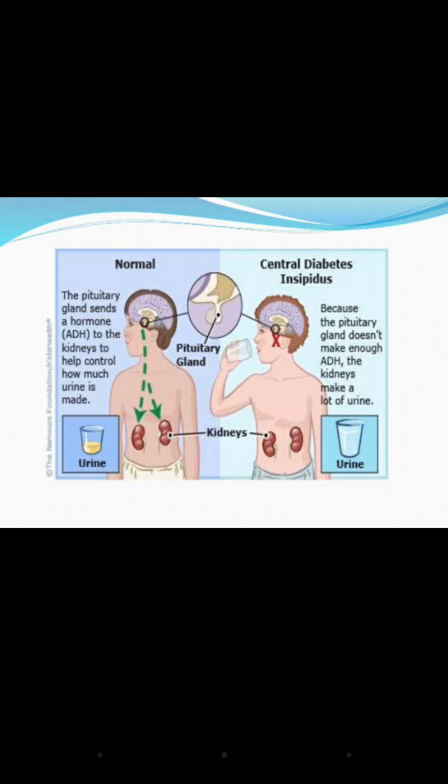There are two types of diabetes insipidus: central diabetes insipidus and nephrogenic diabetes insipidus. Normally, the posterior pituitary gland secretes antidiuretic hormone (vasopressin), which regulates the kidneys and determines how much urine should be excreted.